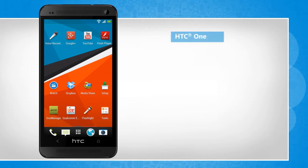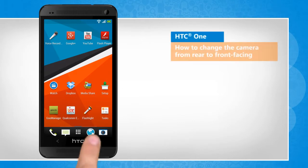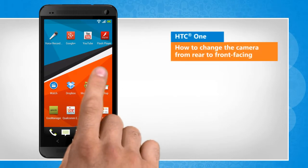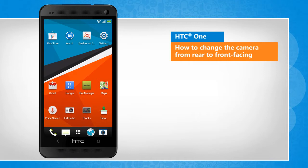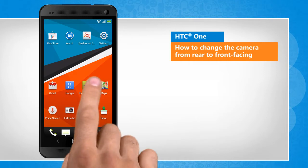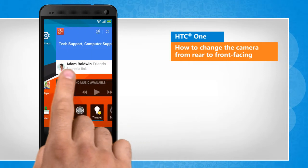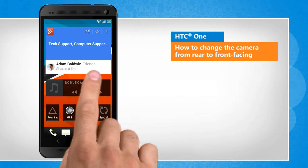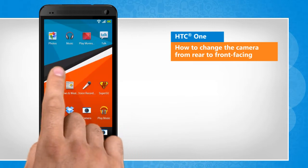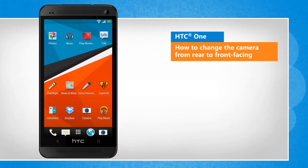Hi friends, your HTC One smartphone is equipped with two cameras, a rear camera and a front camera. Here's how you can switch the camera from rear to front facing on your HTC One device. You will notice a slight difference in the screen transitions than the actual device screen transitions here.